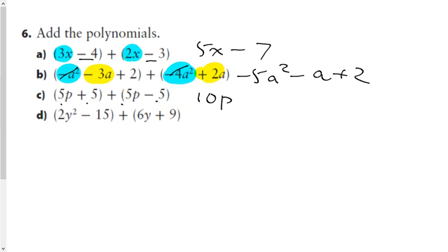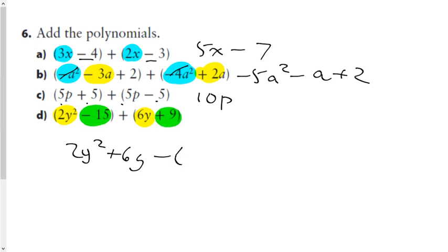Our last one: the y-squared — there are no other y-squareds, so it stands alone as 2y². I'm going to gather the y's next because it's the highest degree term left, giving a positive 6y. Then a negative 15 and a positive 9 make a negative 6 constant when gathered.